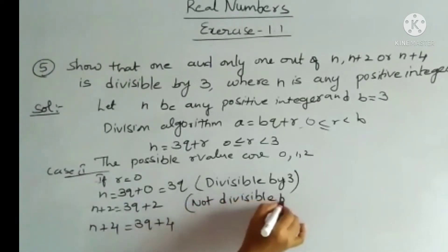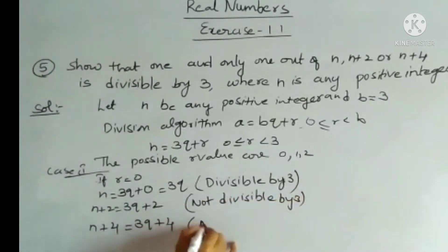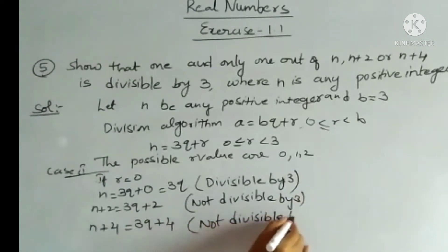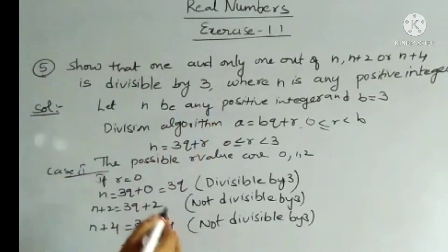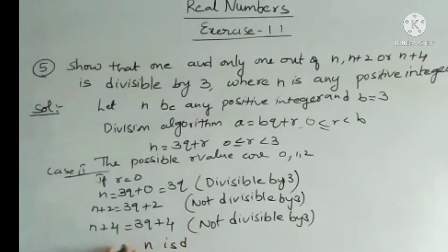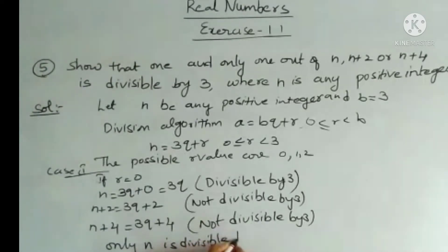Similarly, n + 4 = 3q + 4, which is also not divisible by 3. Therefore, out of n, n+2, and n+4, only n is divisible by 3 in this case. This completes Case 1.